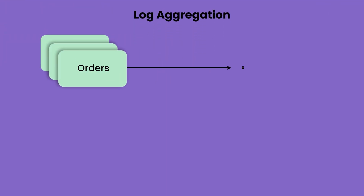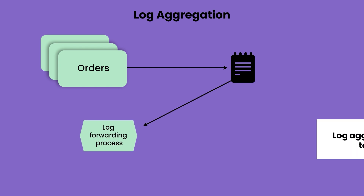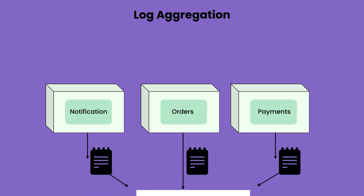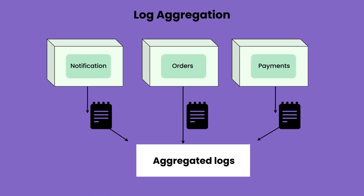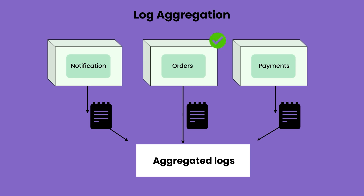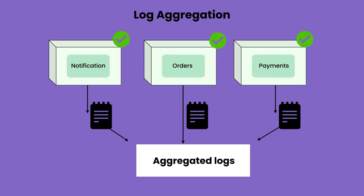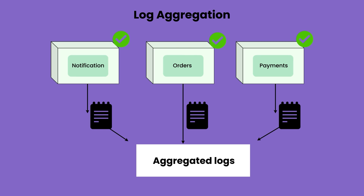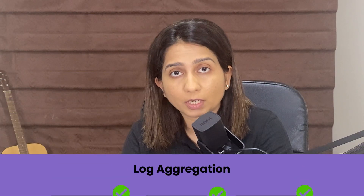If we talk about log aggregation, you would have different deployments of one service producing logs, and there would be some internal daemon collecting all those logs and forwarding them to a tool. But you have to do that not just for one service — for all services — and build aggregated logs. So if an order is placed, a notification is sent, and a payment is made, you should see logs saying order service accepted the order, payment service made the payment, notification service sent the notification, and so on.